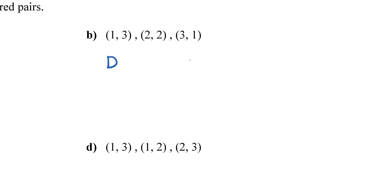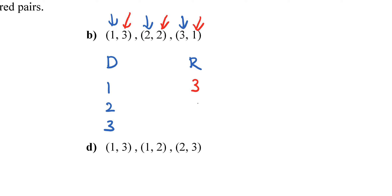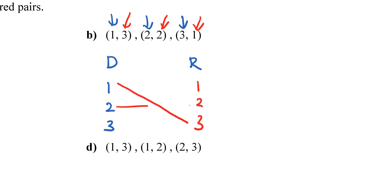For letter B, domain X values are 1, 2, and 3. Range Y values are 3, 2, and 1 — rearranged as 1, 2, 3. So 1 pairs with 3, 2 pairs with 2, and 3 pairs with 1.